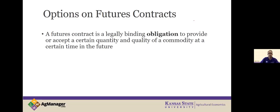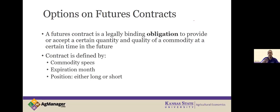A futures contract is a legal agreement. It gives you an obligation to provide or accept delivery of a very specifically defined amount and quality of a commodity. If I'm accepting delivery, that's what we call buying or going long. If I have to deliver or provide, that's what we call selling or having a short position. A futures contract is defined by a specific commodity, expiration month, and position. It's an obligation — you must either make good on delivering or accepting delivery, or you have to offset your position.